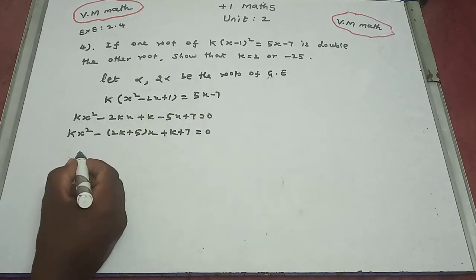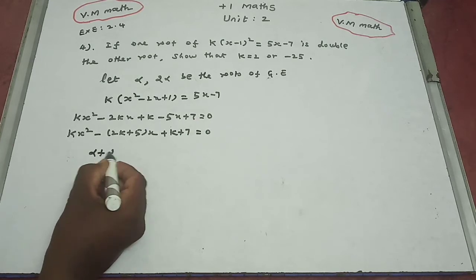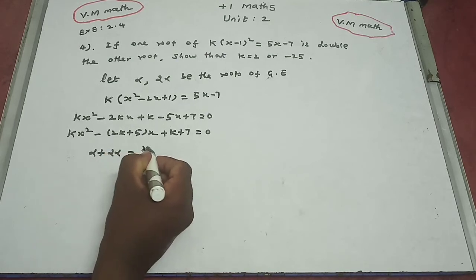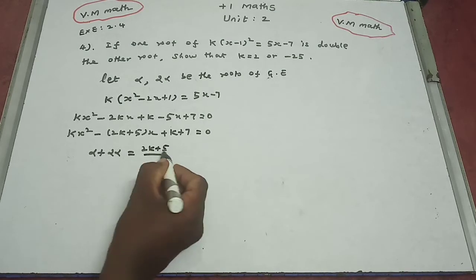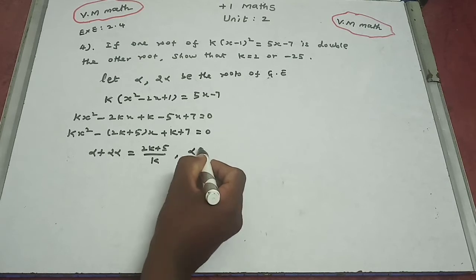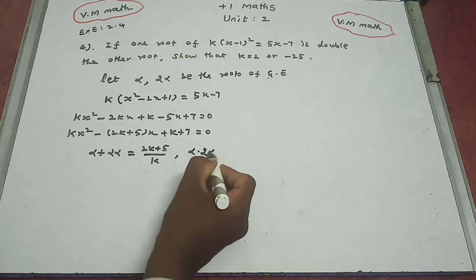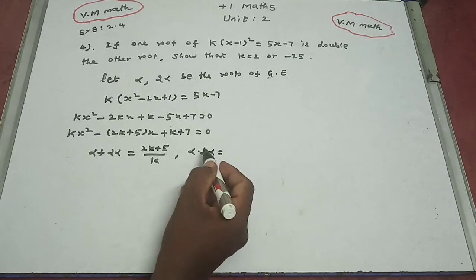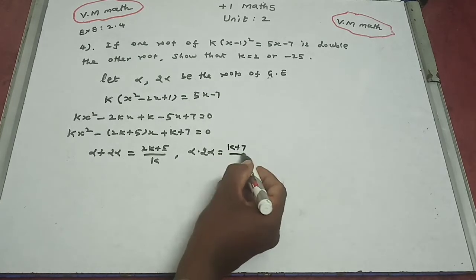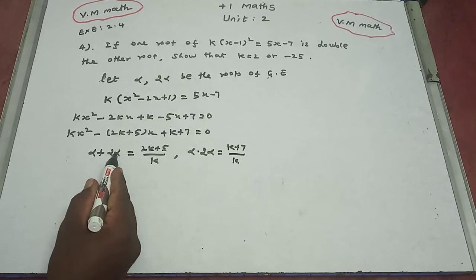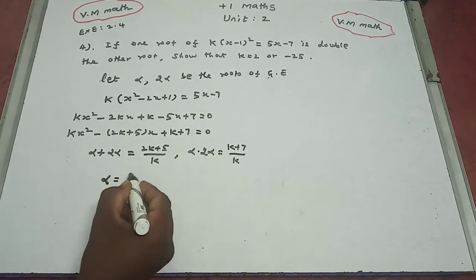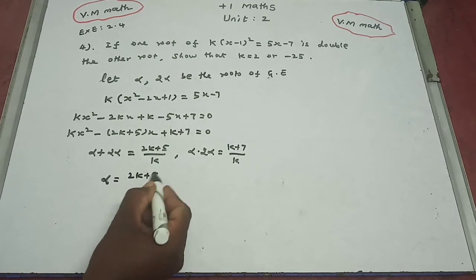Sum of roots: alpha + 2 alpha = (2k + 5) / k, where b = (2k+5) and a = k (the coefficient of x²). Product of roots: alpha × 2 alpha = (k + 7) / k, so 2 alpha squared = (k + 7) / k. From sum: 3 alpha = (2k + 5) / k, so alpha = (2k + 5) / (3k).